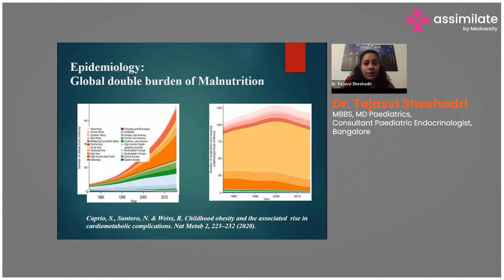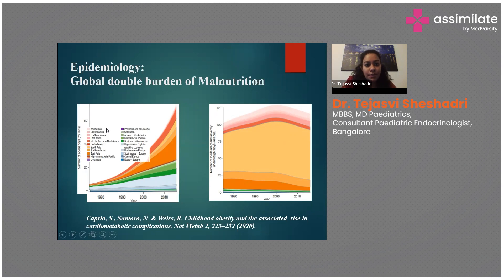Obesity is also considered a form of malnutrition — called obesity malnutrition — because even though a child is overweight with a higher BMI, the essential nutrients required for bodily functions are deficient. This is due to high oxidative stress from obesity and improper eating habits. Previously there was only a single burden — undernutrition — but now there is a double burden of both obesity and malnutrition globally.